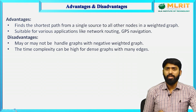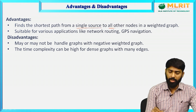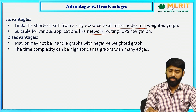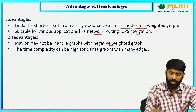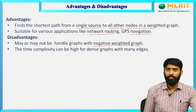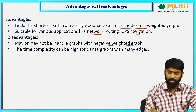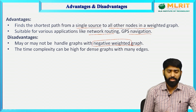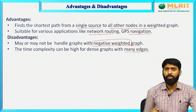Advantages and disadvantages. Advantage of Dijkstra's algorithm: it finds the shortest path from a single source to all other nodes in a weighted graph. It is suitable for various applications like network routing and GPS navigation. Disadvantage: it may or may not handle graphs with negative weights — if the graph contains negative weights, you may not get the correct result.